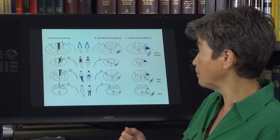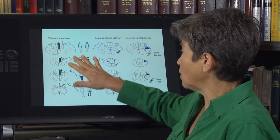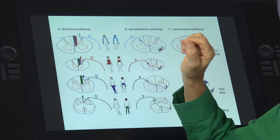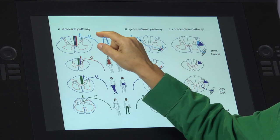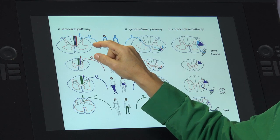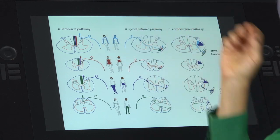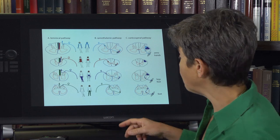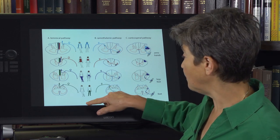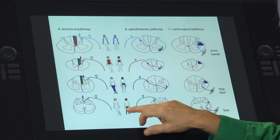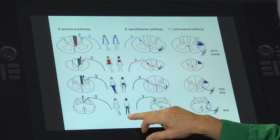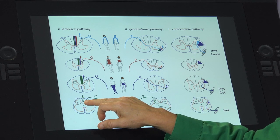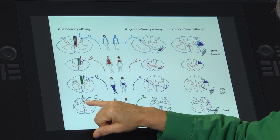So first for the review, there are three pathways that we're talking about. The first one is the lemniscal pathway, also called the dorsal column medial lemniscus pathway. This is a pathway that carries light touch, vibration, and proprioception. Information from these modalities, from the saddle region, the back of the legs, and bottom of the feet, will come in at sacral levels and enter the dorsal columns.